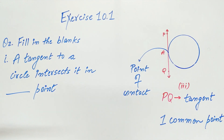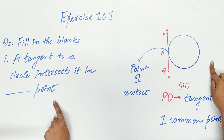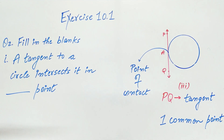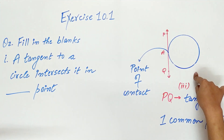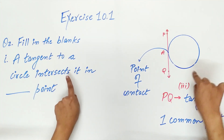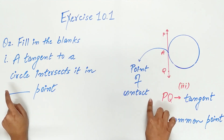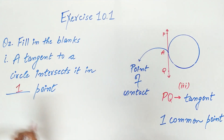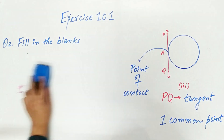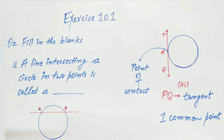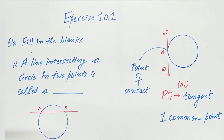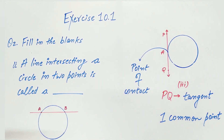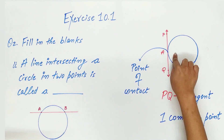Question two asks us to fill in the blanks. Part 1: a tangent to a circle intersects it in how many points? We know there is only one common point between a tangent and a circle, hence a tangent intersects the circle at only one point. Part 2: a line intersecting a circle in two points is called a secant, not a tangent, because a tangent only touches the circle.